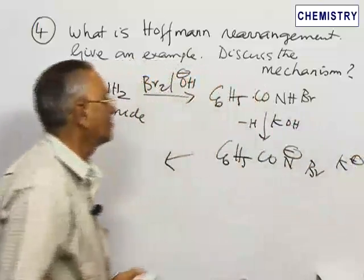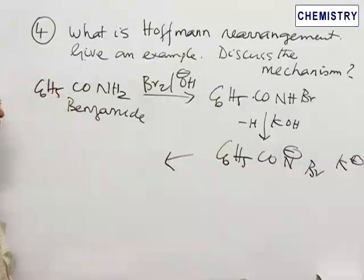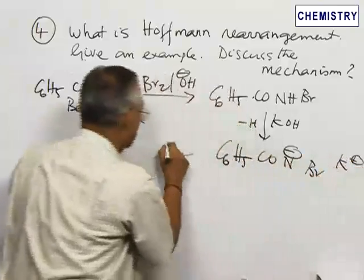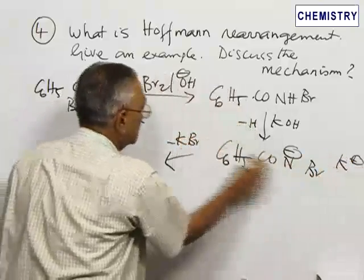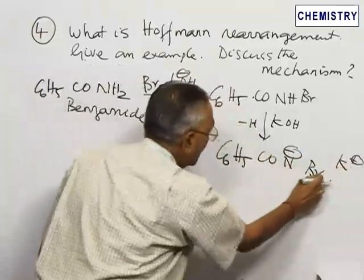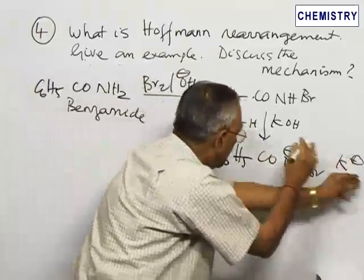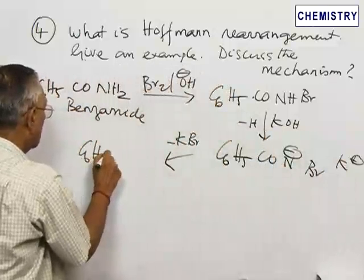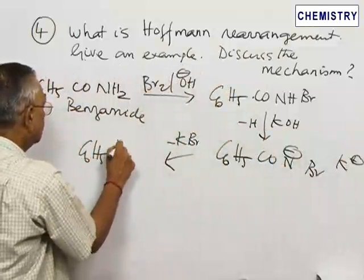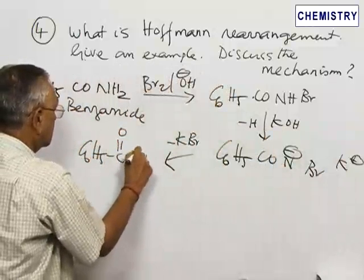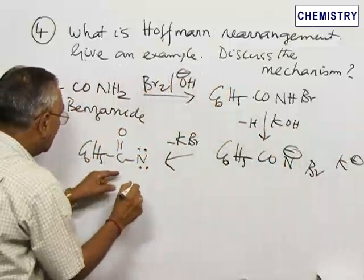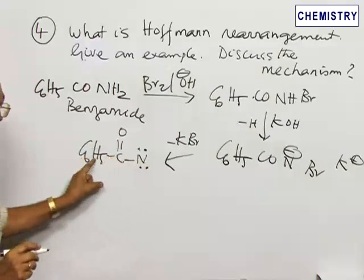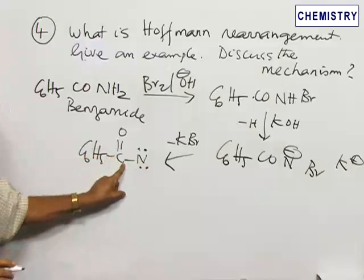The K⁺ and Br⁻ are then lost — KBr leaves — so that it gives rise to a compound known as an acyl nitrene, or benzoyl nitrene, because this contains the phenyl and benzoyl group. This nitrene intermediate is obtained. It is important to remember that nitrene is an electrophile — an electron-deficient species.